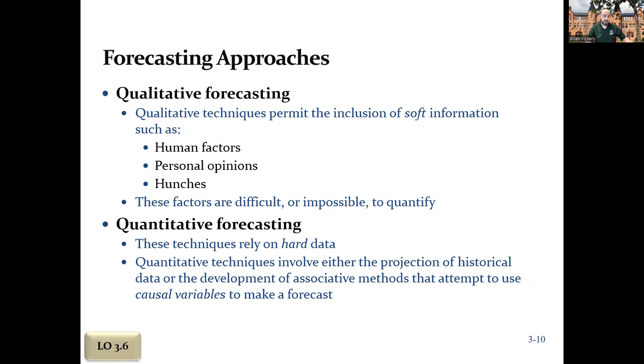Quantitative forecasting relies on the hard data. It usually will either involve projecting historical data or developing associated methods with causal reasons. Associative techniques might be something like, if you have a three-bedroom house in this neighborhood, it's likely to sell more than a four-bedroom house because that's the type of neighborhood it is.